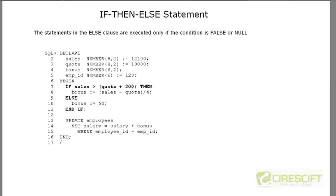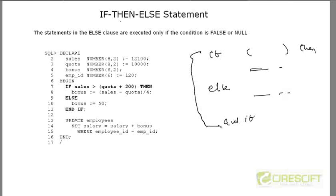Now we are going to do IF-THEN-ELSE. That means if something is true, do something; if this is false or not valid, then go to ELSE and do something else, then complete with END IF. In this example, sales is 12,100 and the threshold is 12,200. So the condition is false, and it goes to the ELSE block at line 10, where I set the value of bonus to 50.